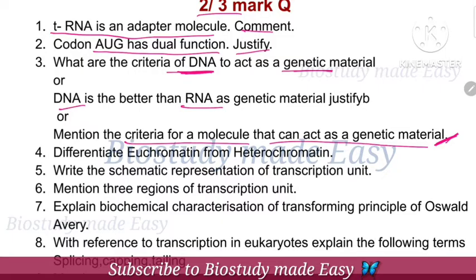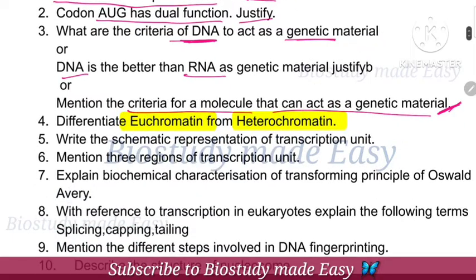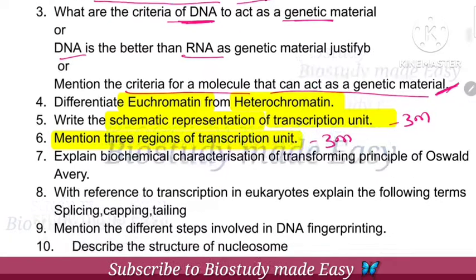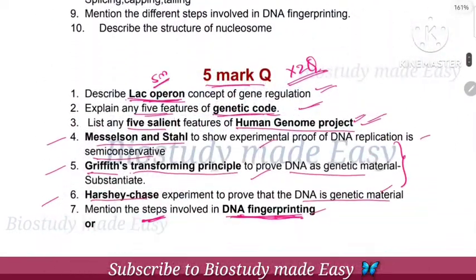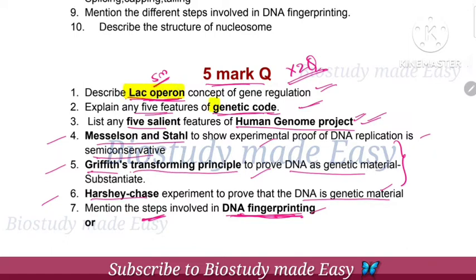Next, euchromatin and heterochromatin — very, very important. The most important question is the transcription unit diagram, for 3 marks. If you have 5 marks: genetic codes, Human Genome Project salient features, and DNA fingerprinting are very important.